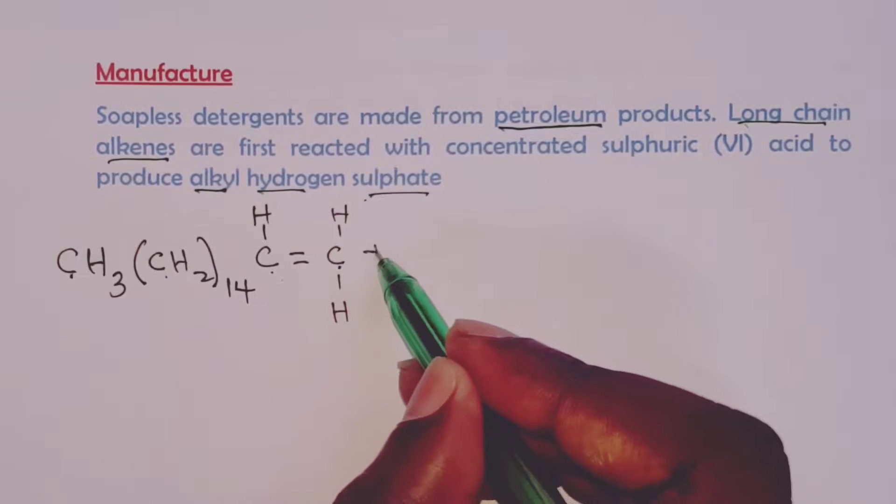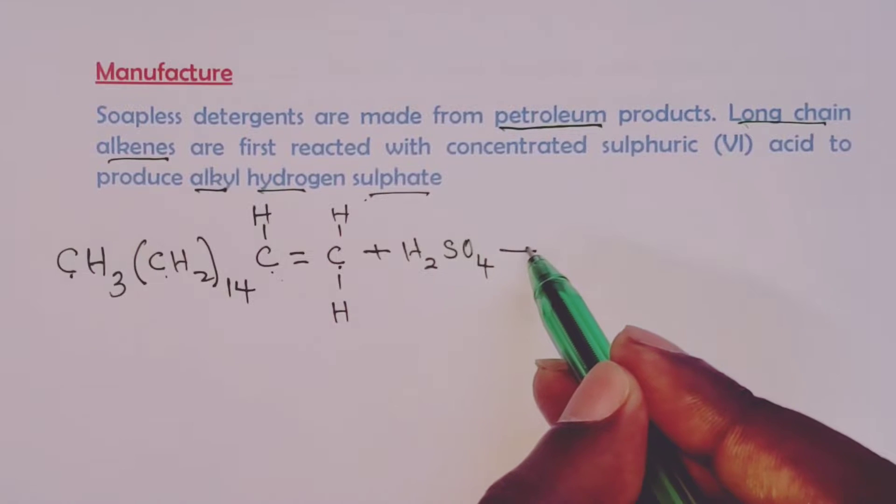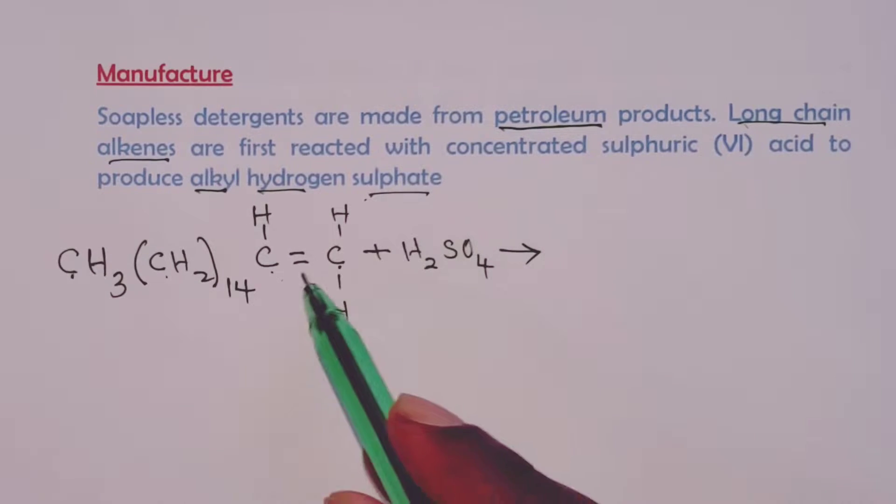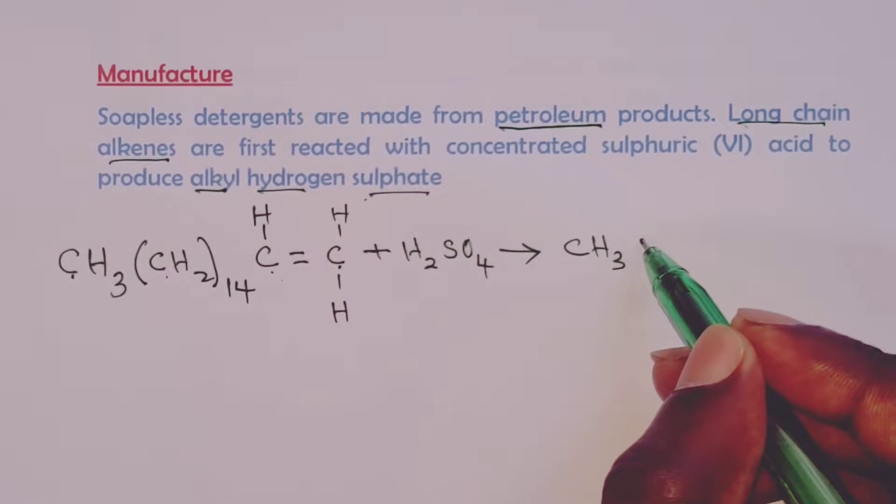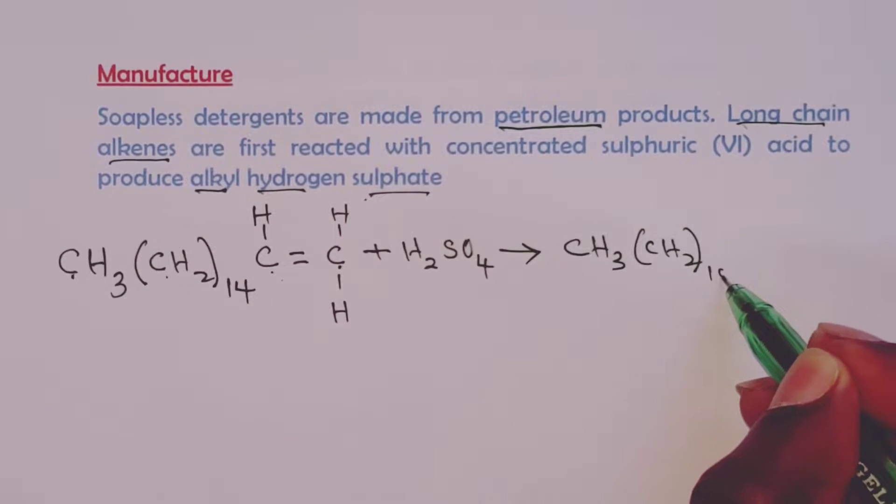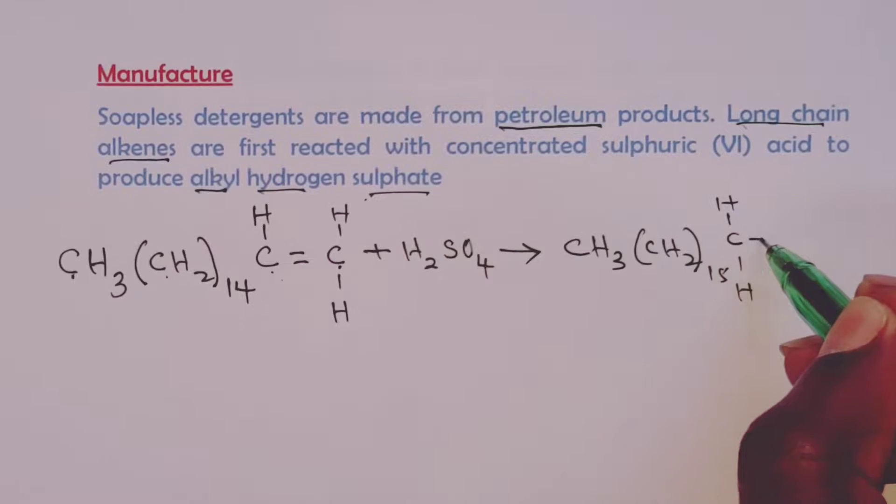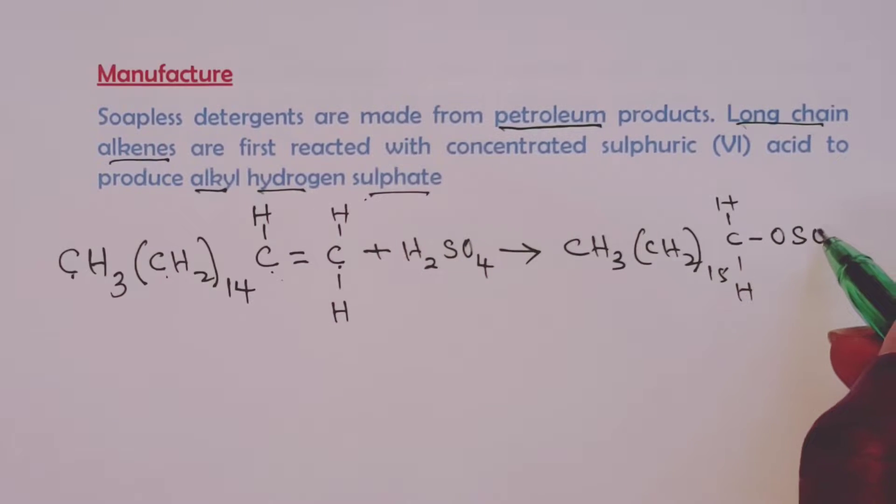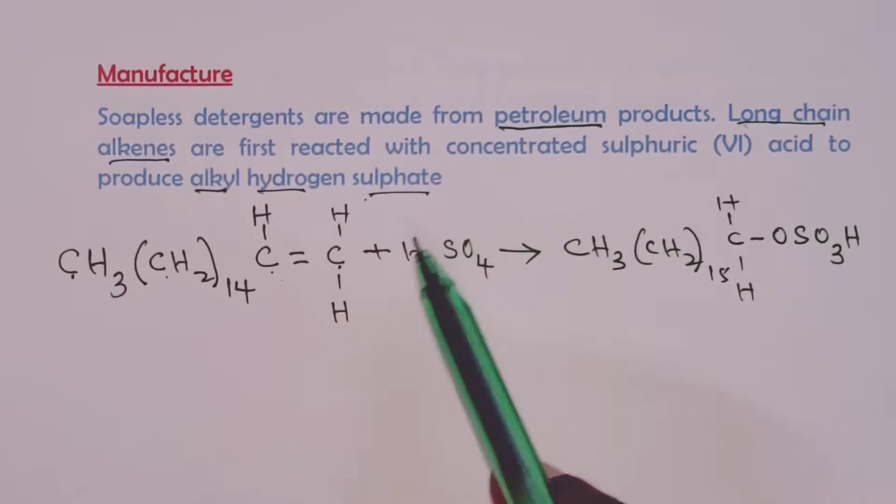So this we first treat with concentrated sulfuric acid. This would give us what we call alkyl hydrogen sulfate with the formula CH3, CH2 15 times, then CH2, and then we have OSO3H. This we form by breaking the double bond here and then reorganizing the atoms in our concentrated acid.